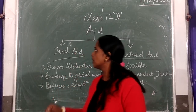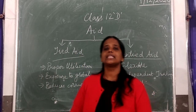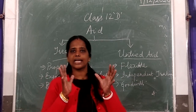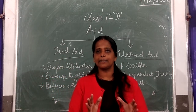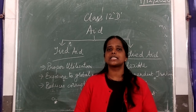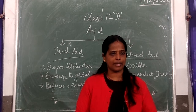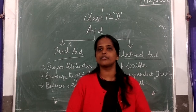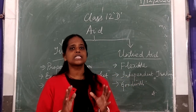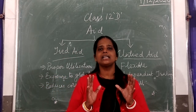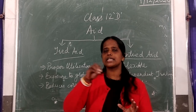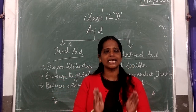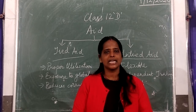This aid and help from developed to developing countries comes in two ways. One is tied aid and the other is called untied aid. Please listen carefully to understand the simple meaning of each.